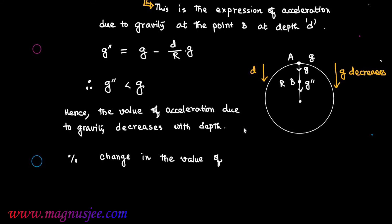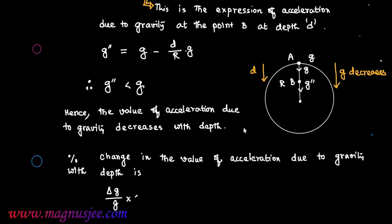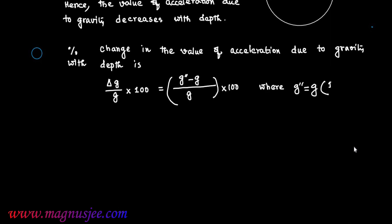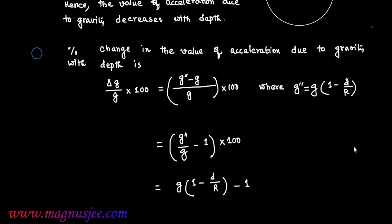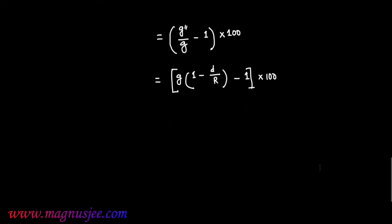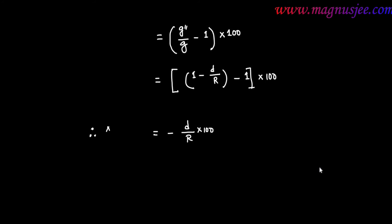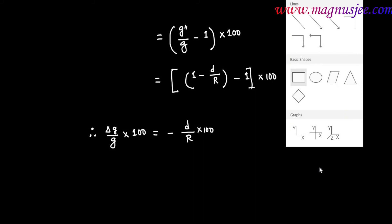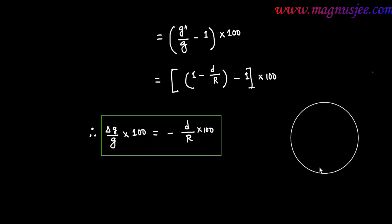The percentage change in the value of acceleration due to gravity with depth D is given by: (Δg/g) × 100 = ((g'' − g)/g) × 100. Since g'' = g(1 − D/R), this simplifies to (1 − D/R − 1) × 100, giving (Δg/g) × 100 = −(D/R) × 100, that is, minus depth divided by radius, times 100.